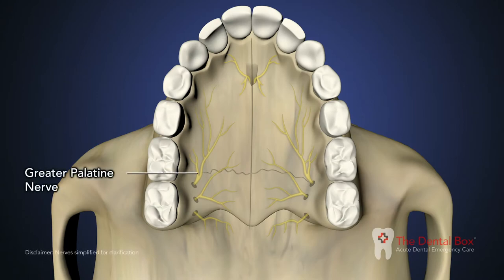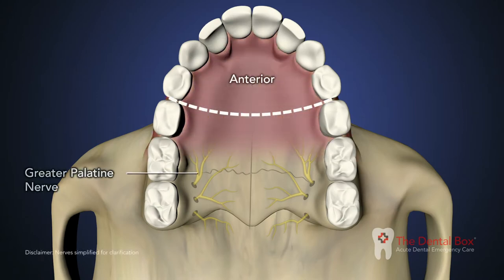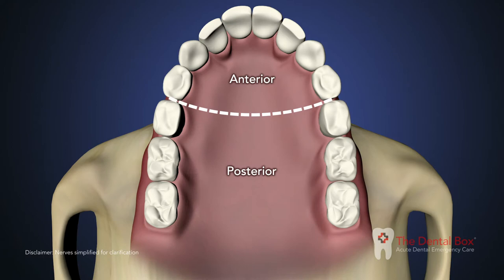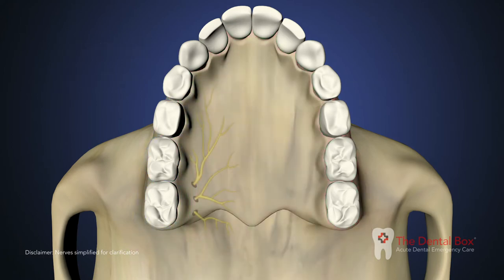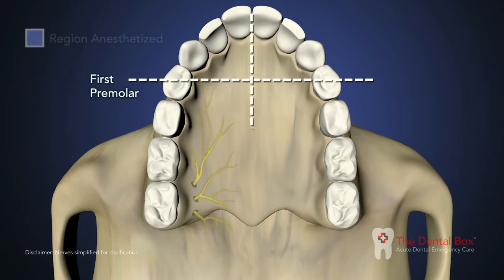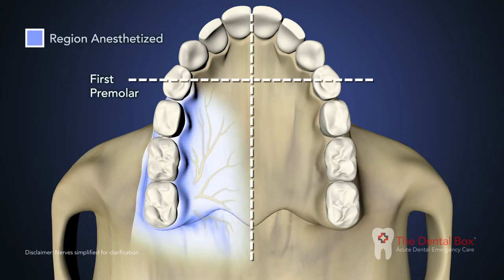The greater palatine nerve block provides anesthesia to the posterior portion of the hard palate and its overlying soft tissues, anteriorly as far as the first premolar and medially to the midline.